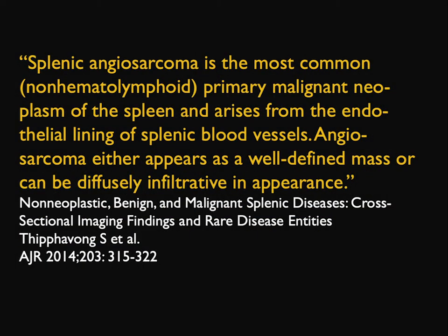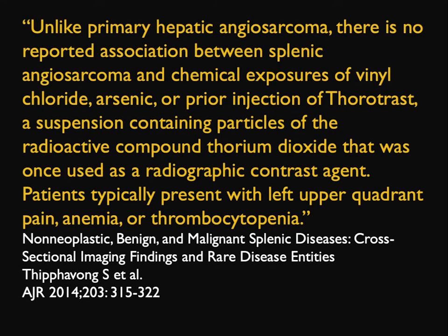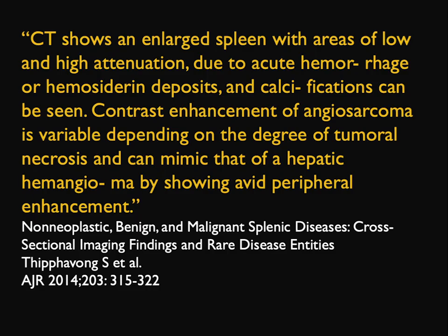A more recent article by Tibhavang describes the most common primary malignant neoplasm of the spleen — arising from the endothelial layer of the splenic blood vessels. They appear as a well-defined mass or can be infiltrating in appearance. We used to talk about angiosarcomas and vinyl chloride exposure, but that's not the case with splenic angiosarcomas — that's something you talk about with hepatic angiosarcomas. One of the things with angiosarcomas: you can have spontaneous splenic rupture.